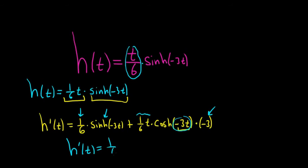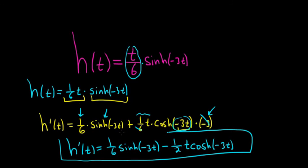1/6th sinh of negative 3t. And I guess we can cancel here, right? The 3 and the 6 cancel. So you're going to get like a negative 1/2 t hyperbolic cosine of negative 3t. And that would be the final answer in this case. I hope this video has been helpful.